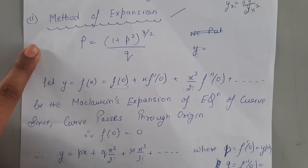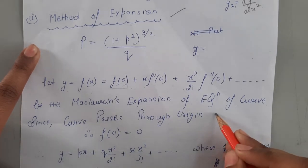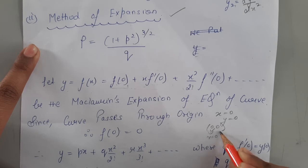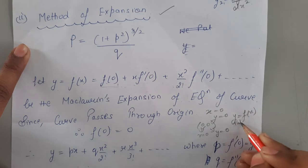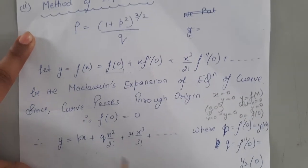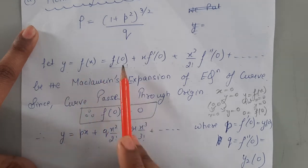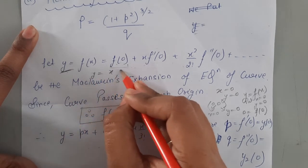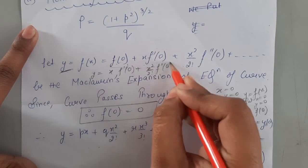We have to find the radius of curvature at the origin, which means the curve passes through the origin, i.e., when x=0 then y=0. So putting x=0 and y=0 into y=f(x) gives 0 = f(0), therefore f(0)=0. Substituting this back, y becomes: x·f'(0) + (x²/2!)·f''(0) and so on.